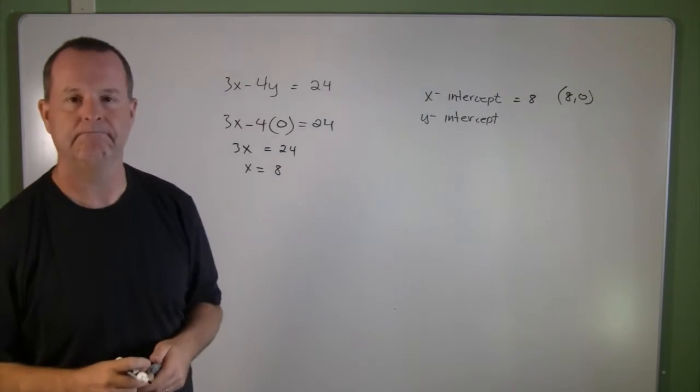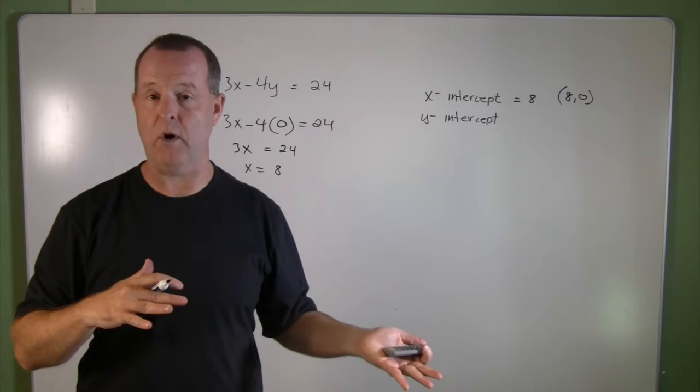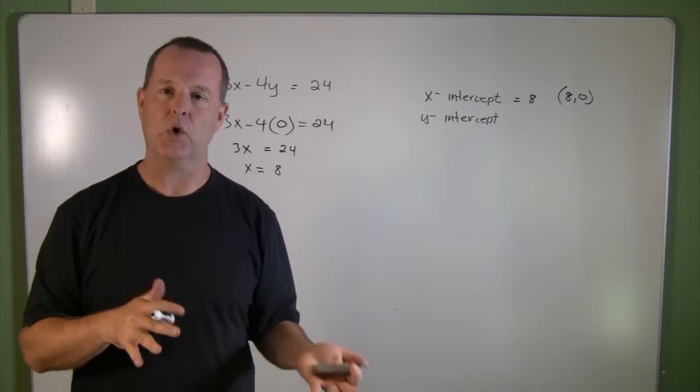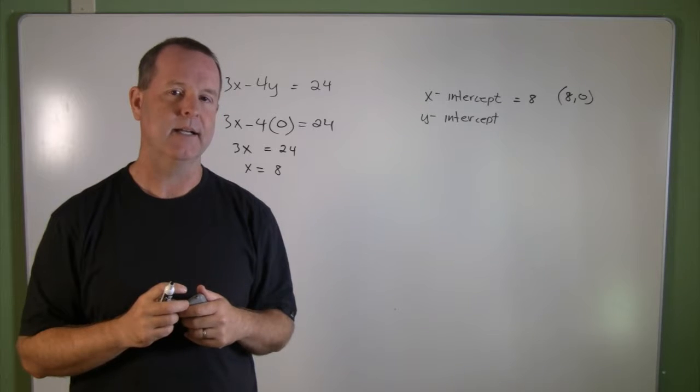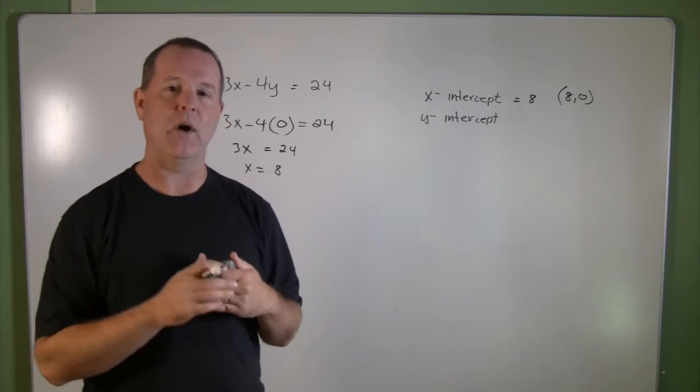Okay, now with its y-intercept. It's similar as before. Its y-intercept means that this graph crosses the y-axis at the point where x equals 0.